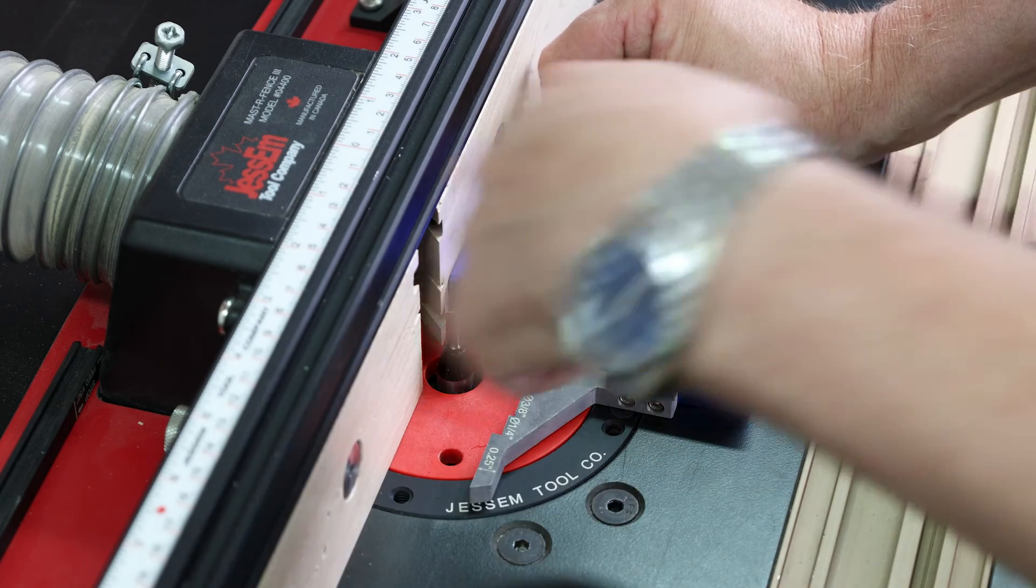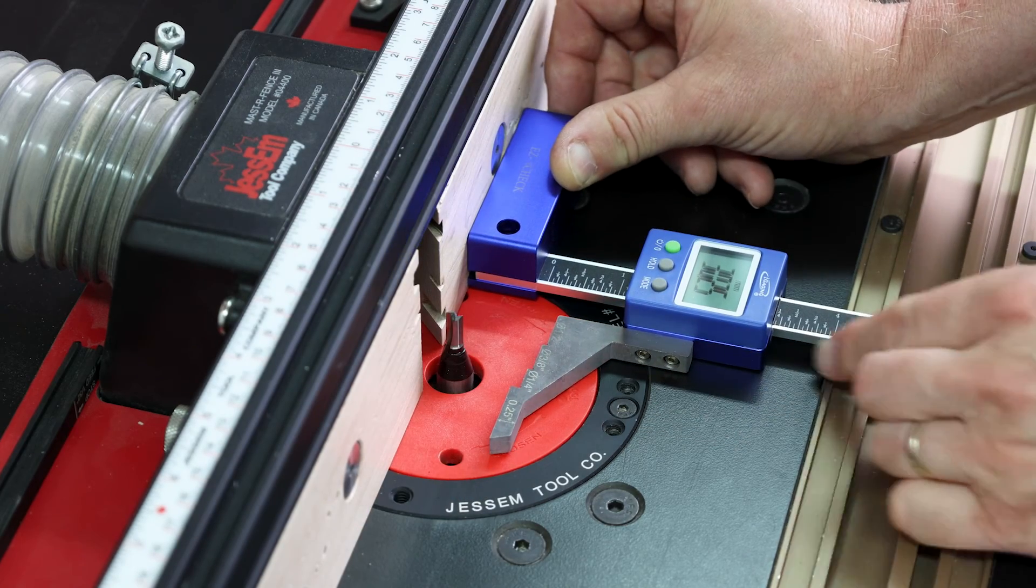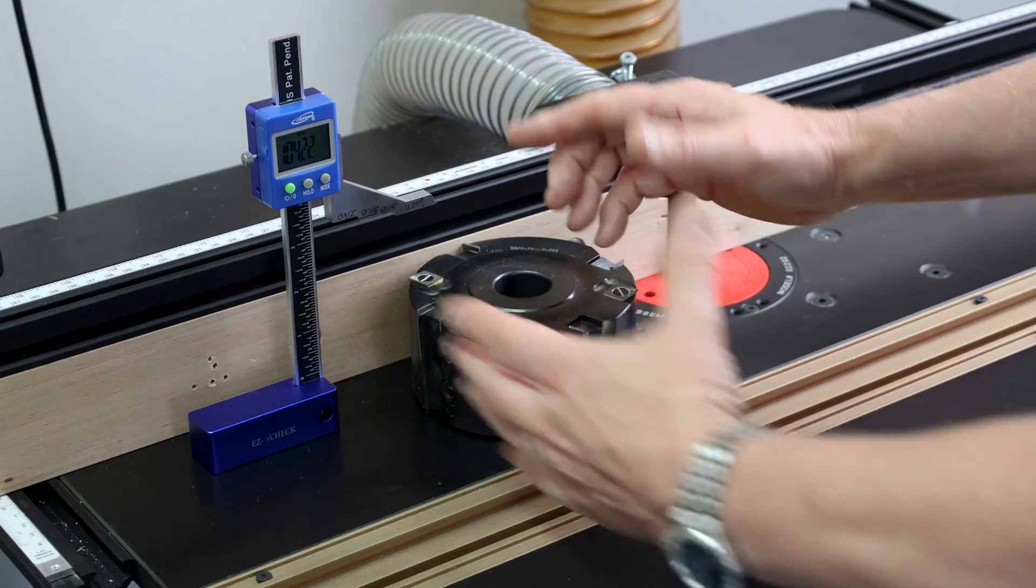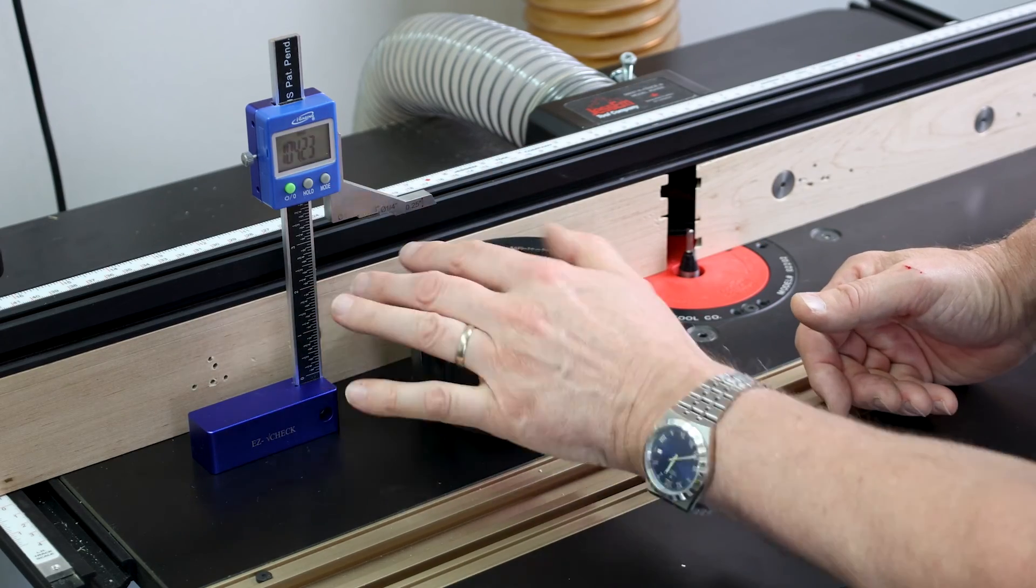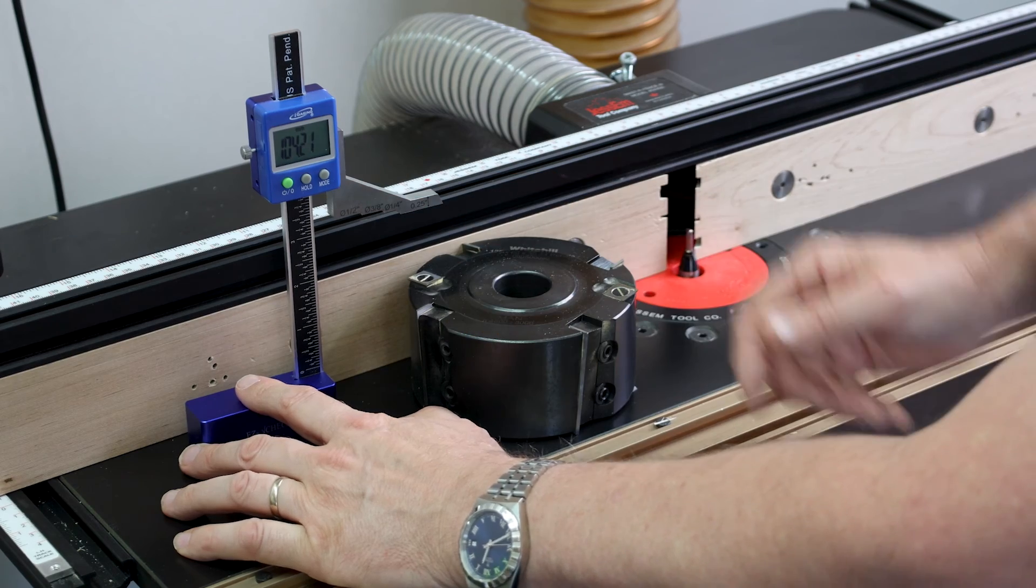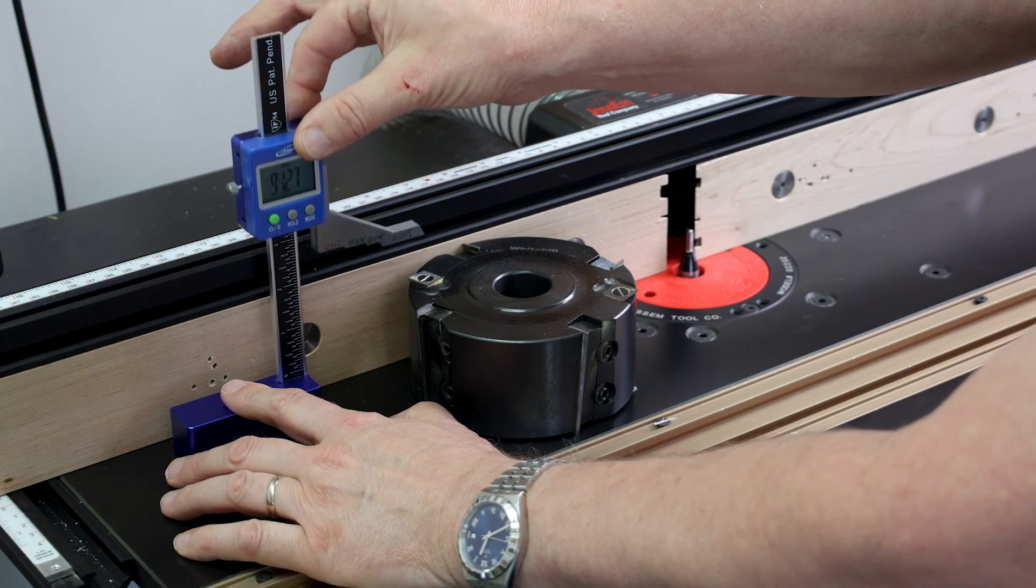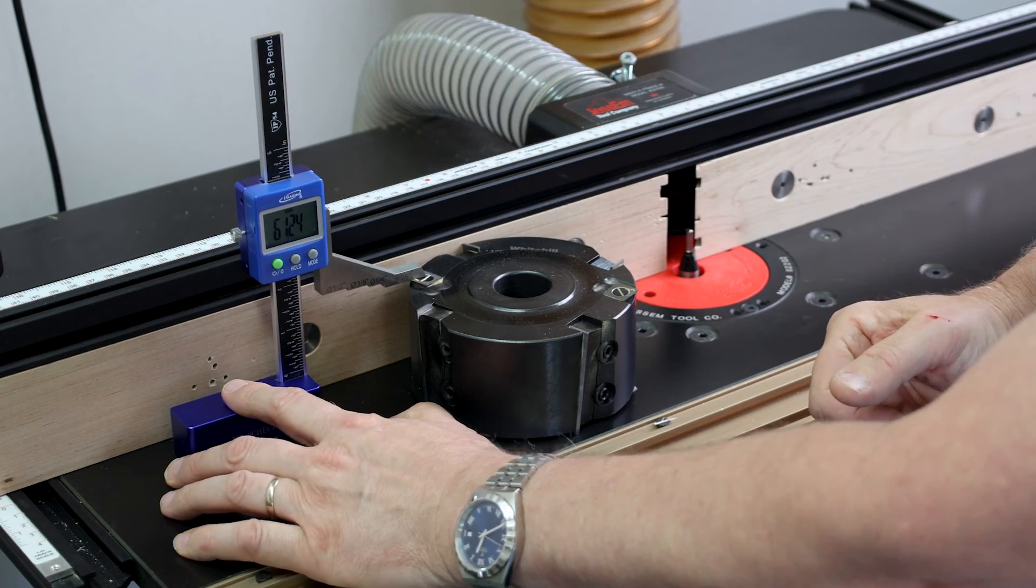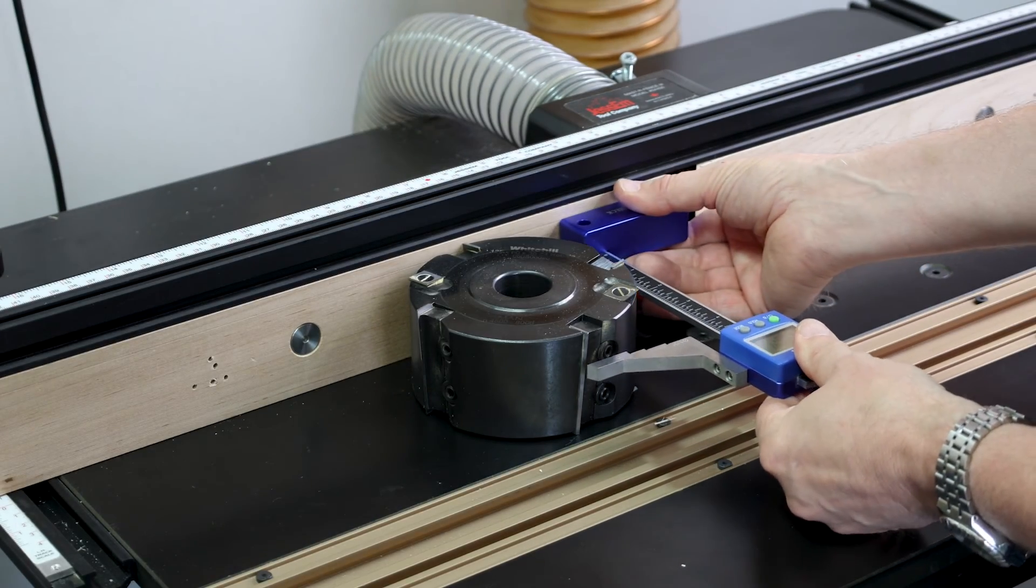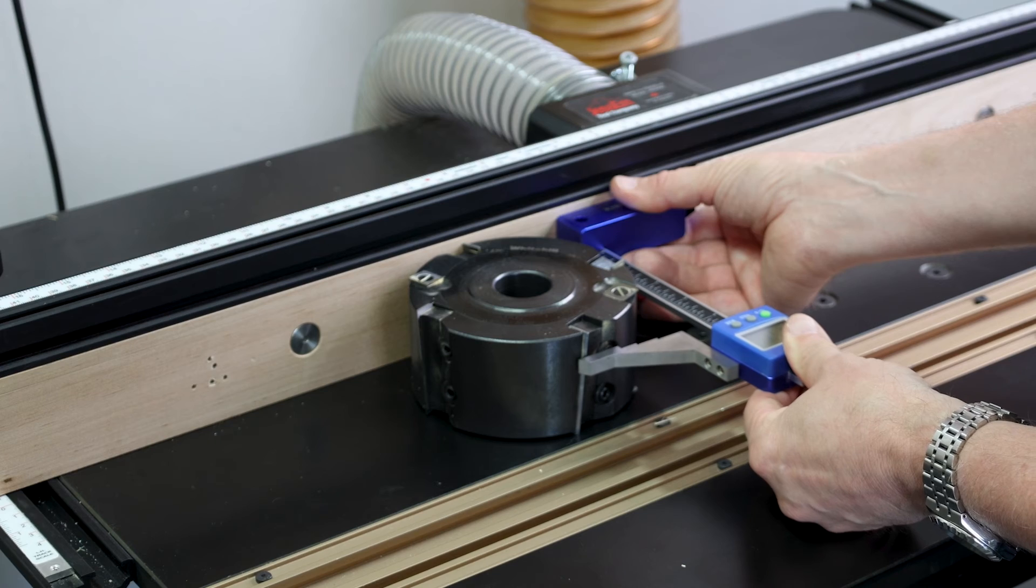We can also use the EZ-Check on things like the spindle molder because it's quite a big size. We've got 75 millimeters or three inches worth of reach. So we could use that if we were trying to set up a height of a block, or a block from a fence out to its exterior dimension.